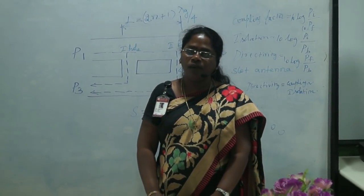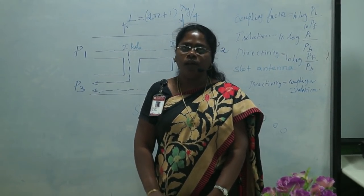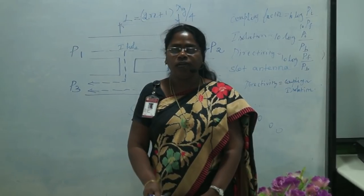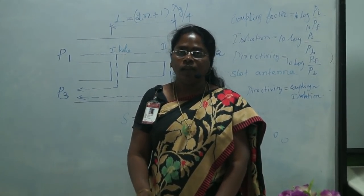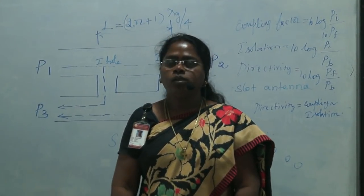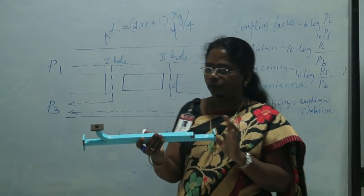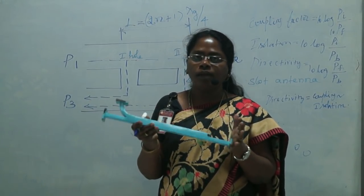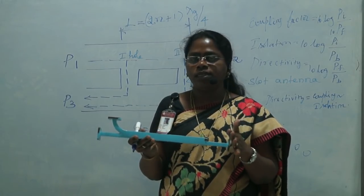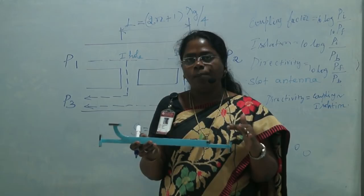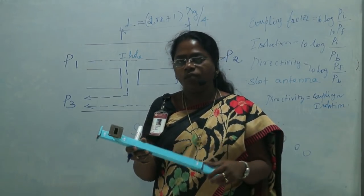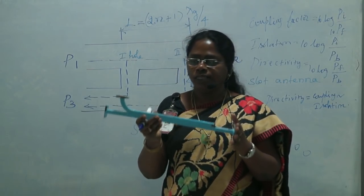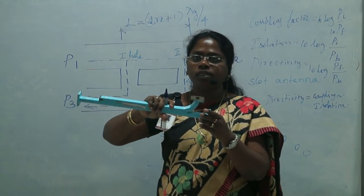Regarding applications, the directional coupler is used to measure incident power, reflected power, and VSWR value. Frequency measurement can also be performed, and we can find the reflection coefficient, directivity, isolation, and insertion loss. Insertion loss occurs when a microwave component is inserted into the bench — the disturbance it creates causes some loss, which is called insertion loss. Compared to isolation loss, insertion loss is very minimal, and it should be calculated only with respect to the forward direction.